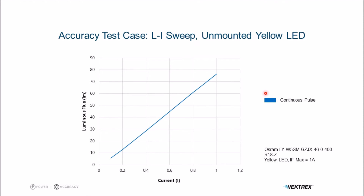It's an LI sweep with a continuous pulse measurement. Here we can see the sweep from low current to high current is pretty linear — this happens to be a yellow LED. We can do the same sweep with single pulse, and we see it's a little bit less linear; it's actually curved down and ends about 25% below the continuous pulse. The same sweep with DC mode is even more pronounced in curvature — in fact, it's 70% down at the final highest current.